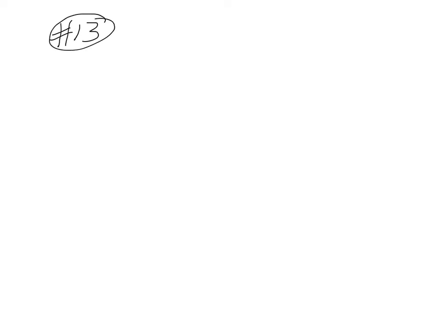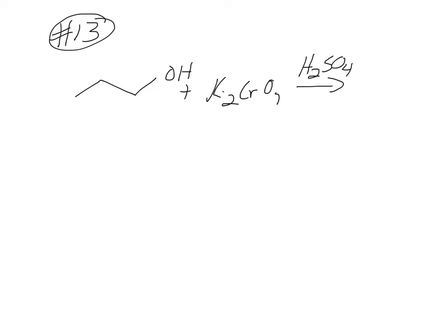Number 13 is propanol. They're using K2CrO7 and H2SO4. The key here is: anytime you see chromium, that's a really strong oxidizing agent. They'll show you chromium in lots of different ways — K2CrO7, H2CrO7, CrO3. Anytime you see chromium, it's a strong oxidizing agent, and that means for every alpha C-H there is, you will get a new C-O bond.